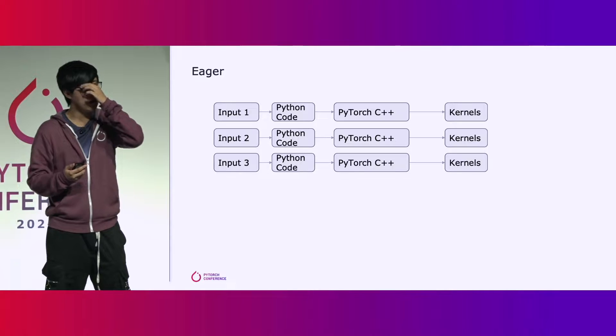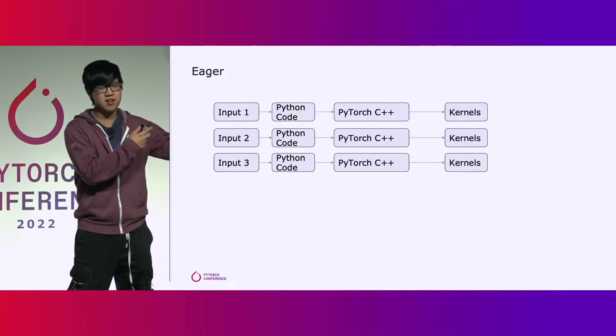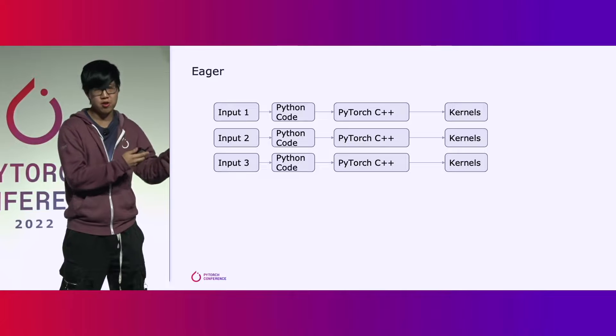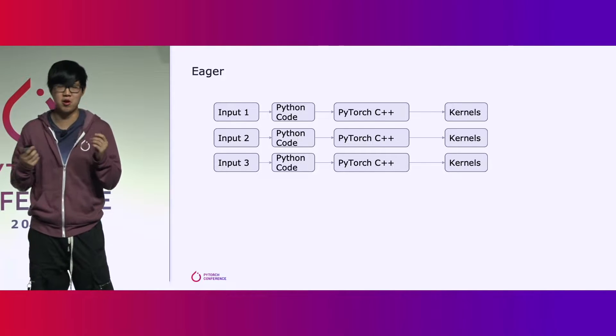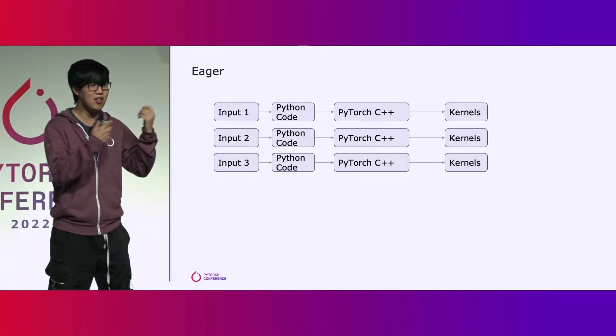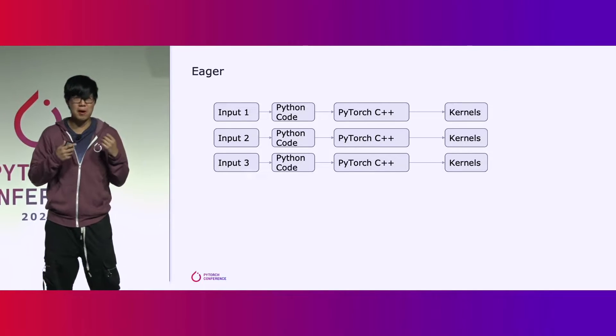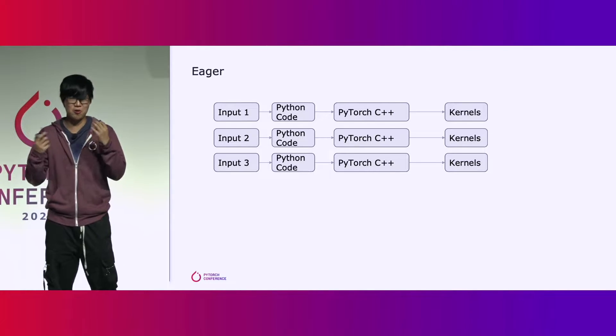To understand why, let's take a look at the execution flow between eager mode and PyTorch 2.0. In eager mode, when you get a tensor in, you go through the Python code, then the PyTorch C++ code, and then the kernels. And when you get another input, you go through the Python code again, then the PyTorch C++ code again, and then the kernels again.